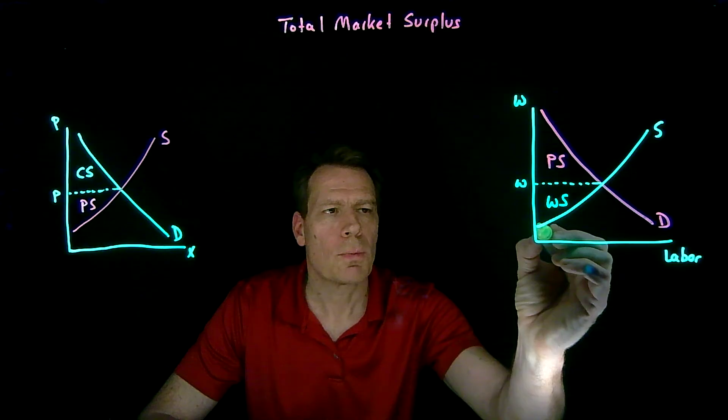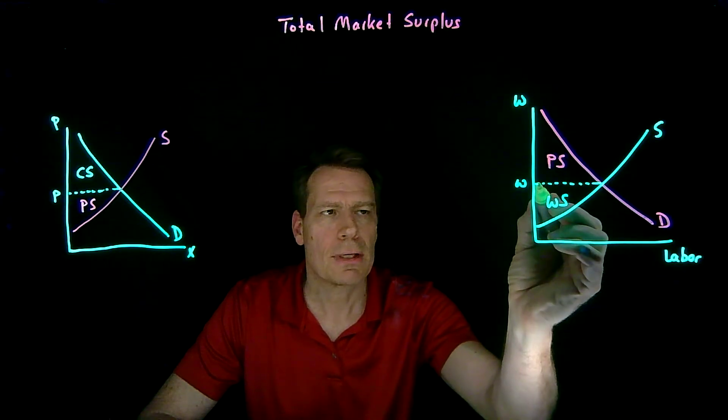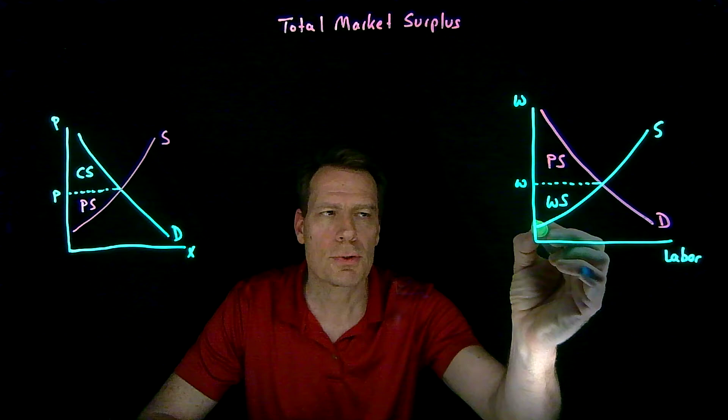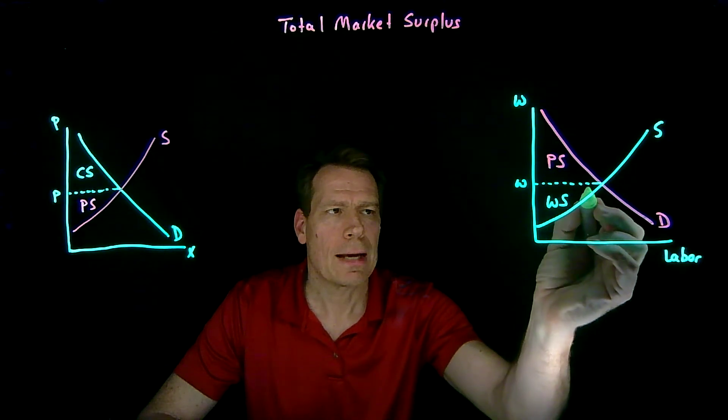So a worker might be willing to work for this wage, but actually gets to collect this wage. So that worker would get this much surplus. We can add those all up.